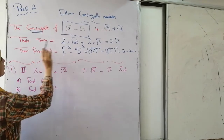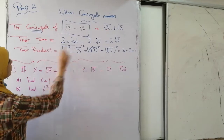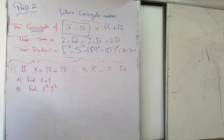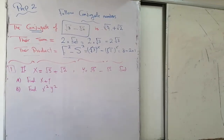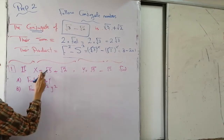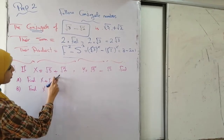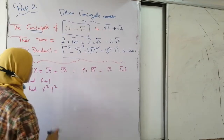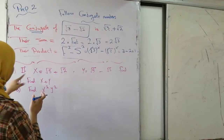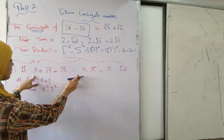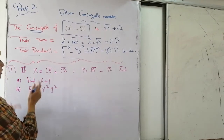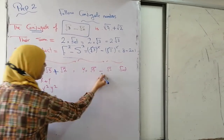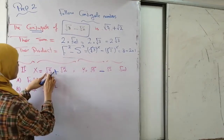So these are the rules we need to know: their sum equals 2 times the first term; the product equals first squared minus second squared. Now the question says: if x equals root 5 plus root 2, and y equals root 5 minus root 2 — by just looking, is x conjugate to y? Yes, correct, because we have positive here and negative there with the same terms.